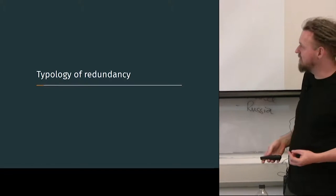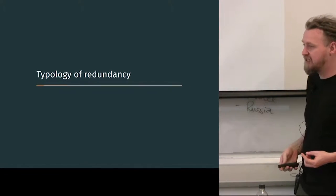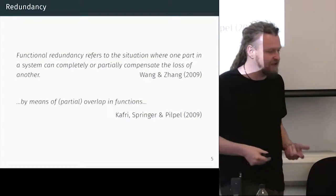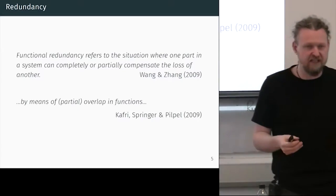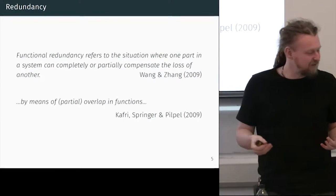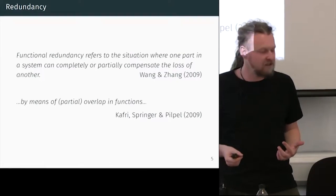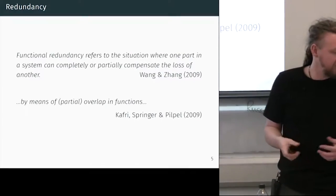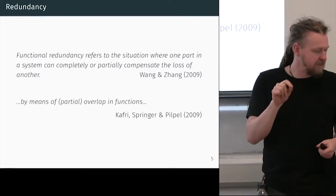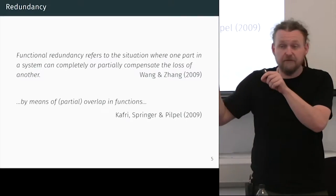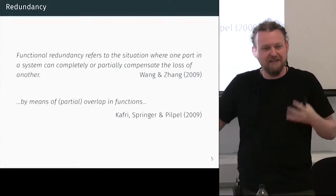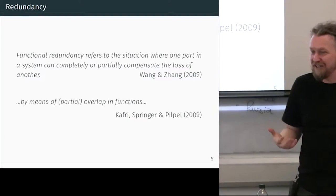Let's begin with a typology of redundancy. To start, if we're typologising over languages and trying to classify data, we need a basic functional definition in order to get us going. Here are some definitions I've got of redundancy. We might define redundancy as: functional redundancy refers to the situation where one part of a system can completely or partially compensate for the loss of another. If we lose a bit of the system and it still works, then that bit we lost was redundant.